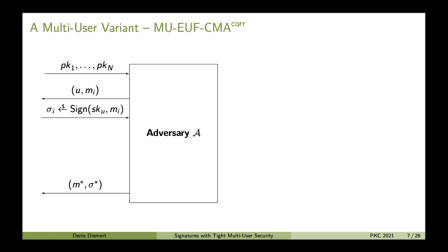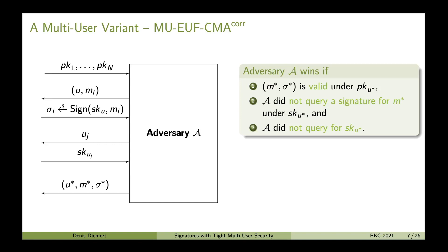Another thing that becomes interesting only in the multi-user setting is adaptive corruptions. This means the adversary gets the opportunity to query for secret keys of a subset of users — if it queries for user identifier U, it gets secret key SK_U in response. In the end, similar to signing queries, the adversary needs to tell for which of the users the forgery attempt should be valid for. The winning condition is: the adversary A wins if (M*, σ*) is valid under PK_{U*}, A did not query a signature for M* under secret key U*, and A did not query for SK_{U*}.